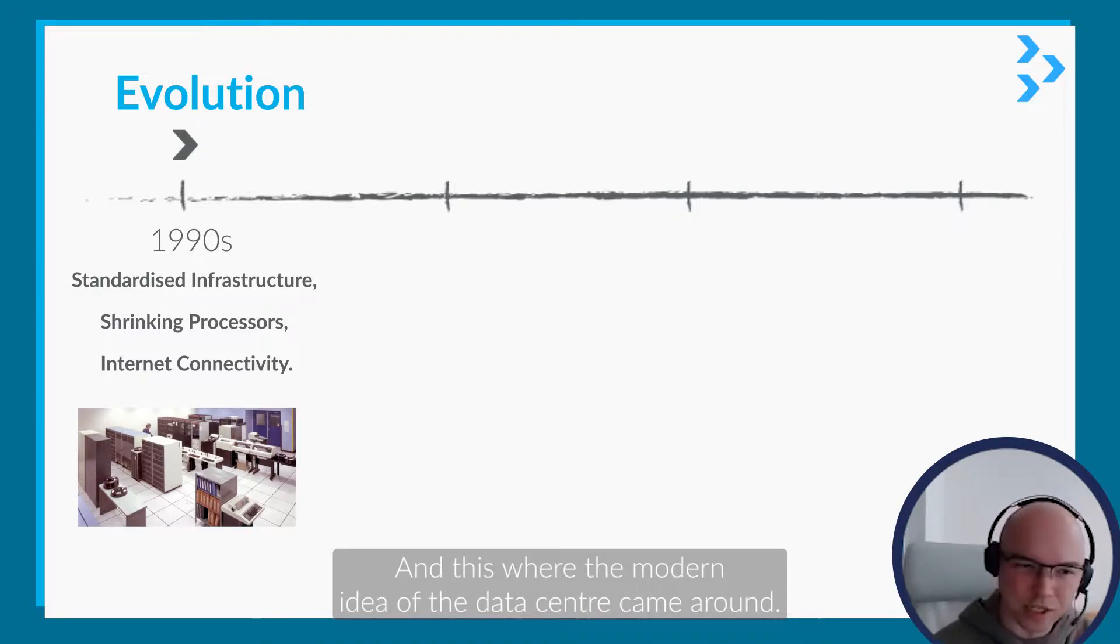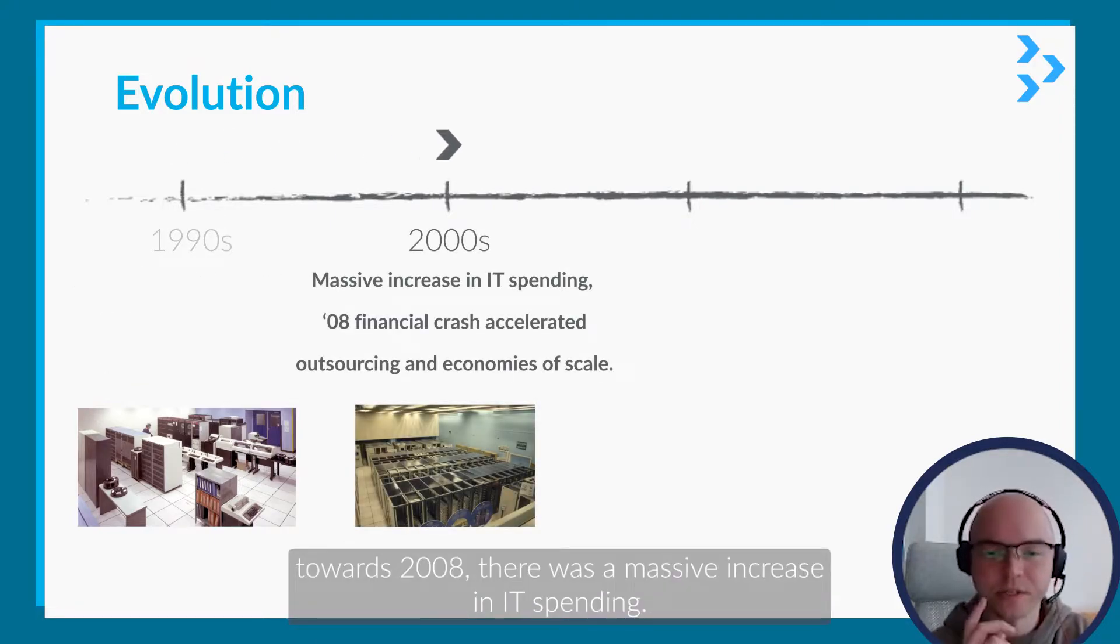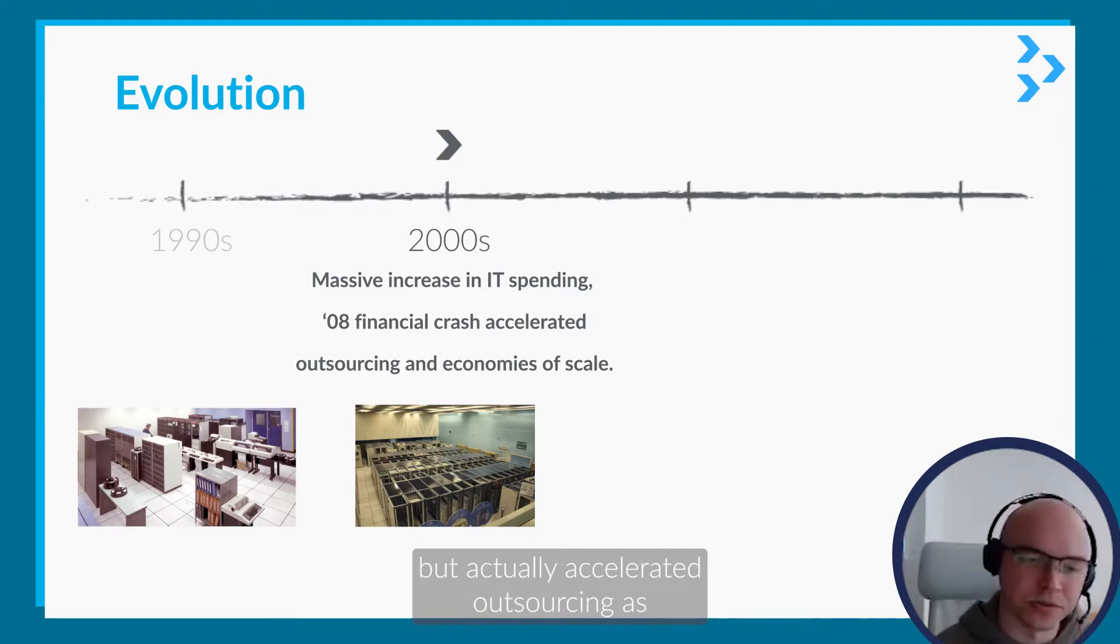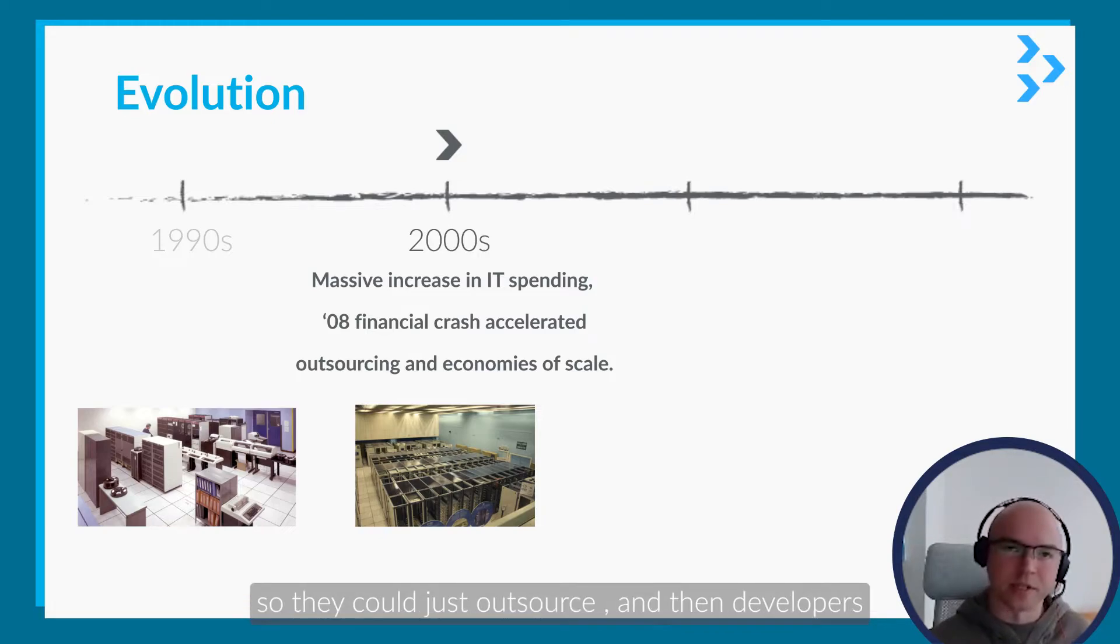In the 2000s, particularly towards 2008, there was a massive increase in IT spending, which seemed strange because this occurred around the financial crash. But it actually accelerated outsourcing as companies wanted to remove capital expenditure from their balance sheets. Developers building them could focus on economies of scale, creating bigger and bigger data centers.